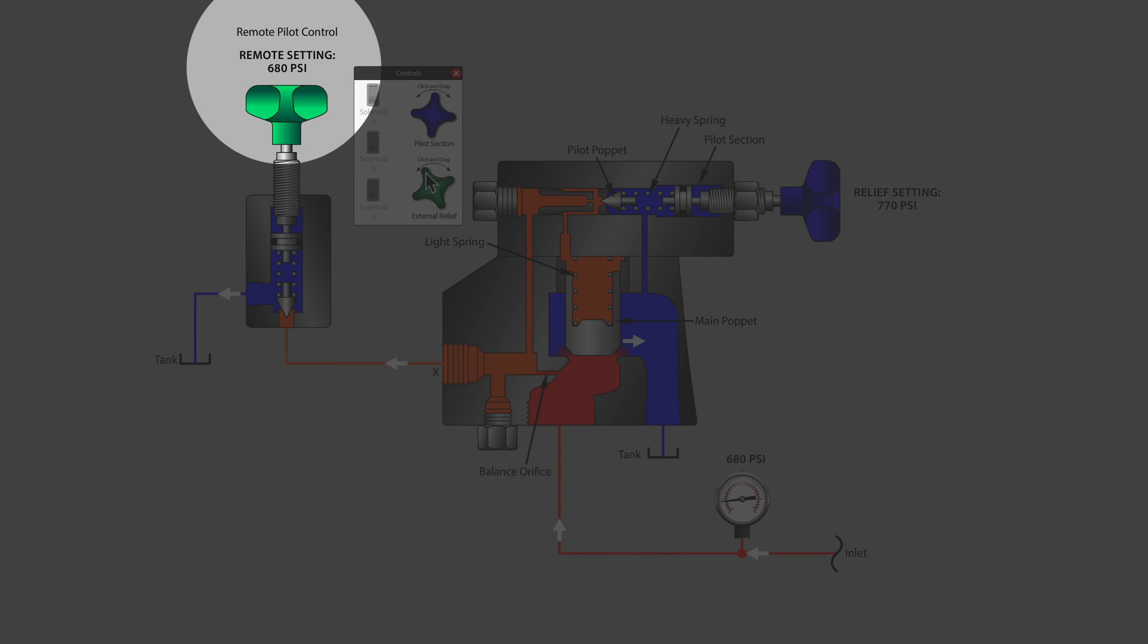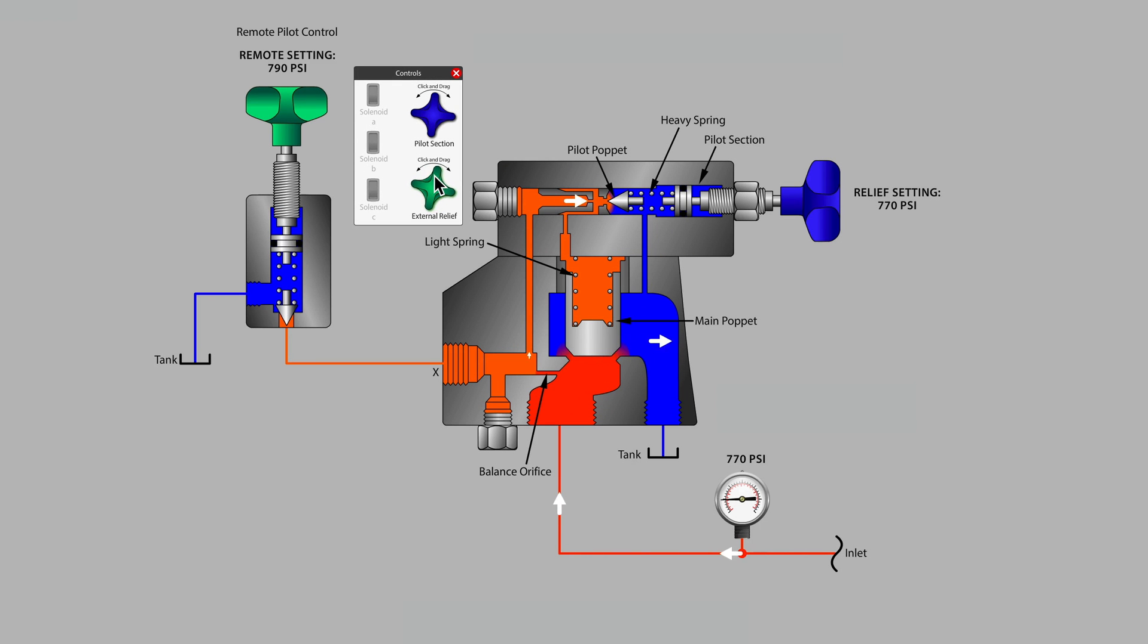The main pilot section takes over control again. So let me ask you a question: are these two pilot sections, the remote and the bolt-on pilot section at the relief valve, are those two pilot sections plumbed in series or are they plumbed in parallel?